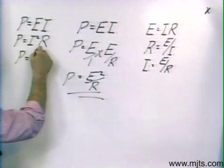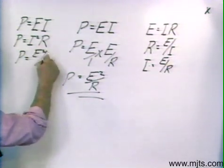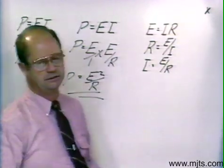So we have a new power formula now. P then is equal to E squared over R.